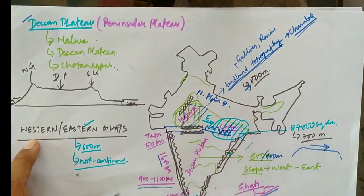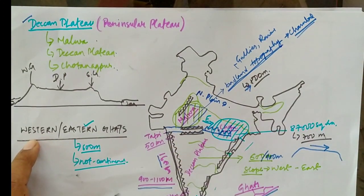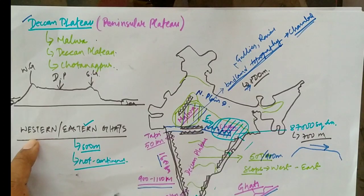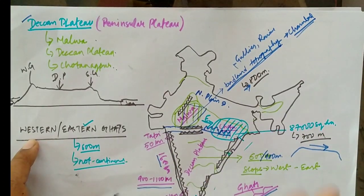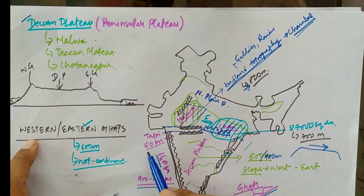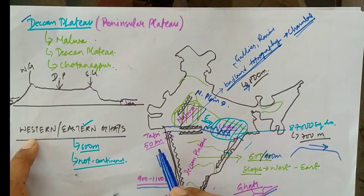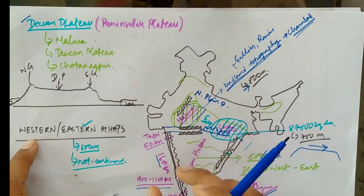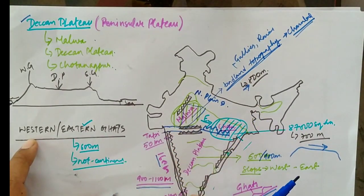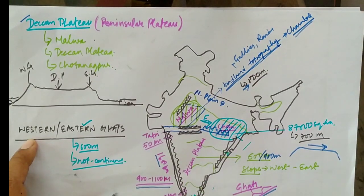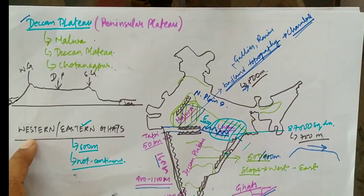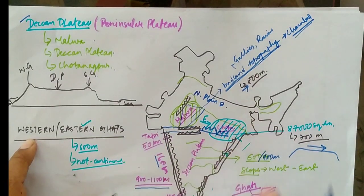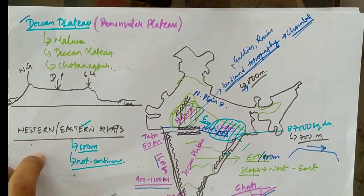The Western Ghats extend from River Tapi to Kanyakumari with a length of 1600 kilometers. The width of the Western Ghats is quite narrow in the north, with an average width of 50 kilometers, and towards the south it becomes a little broader, around 80 kilometers.